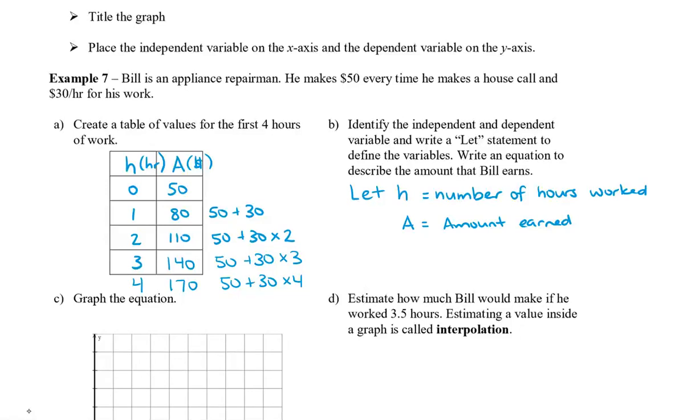Alright, so I'll write an equation to describe the amount that Bill earns. Actually, even just taking a look at our pattern in how we wrote the equation, we can see that the amount earned is equal to 50, plus 30 times whatever our time is. So I'm going to rewrite it as 30 times h, that's how many hours he works, plus 50.